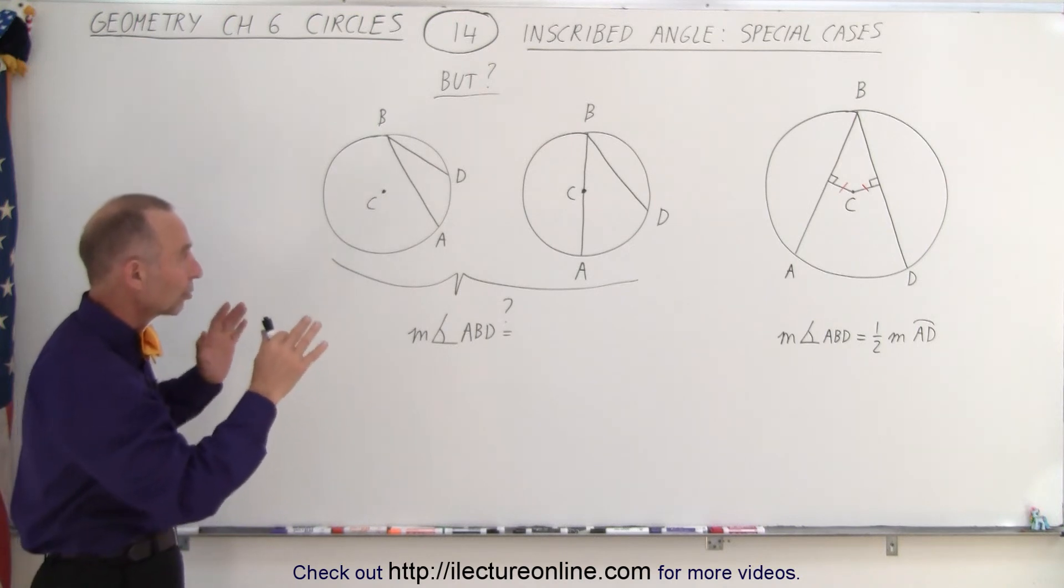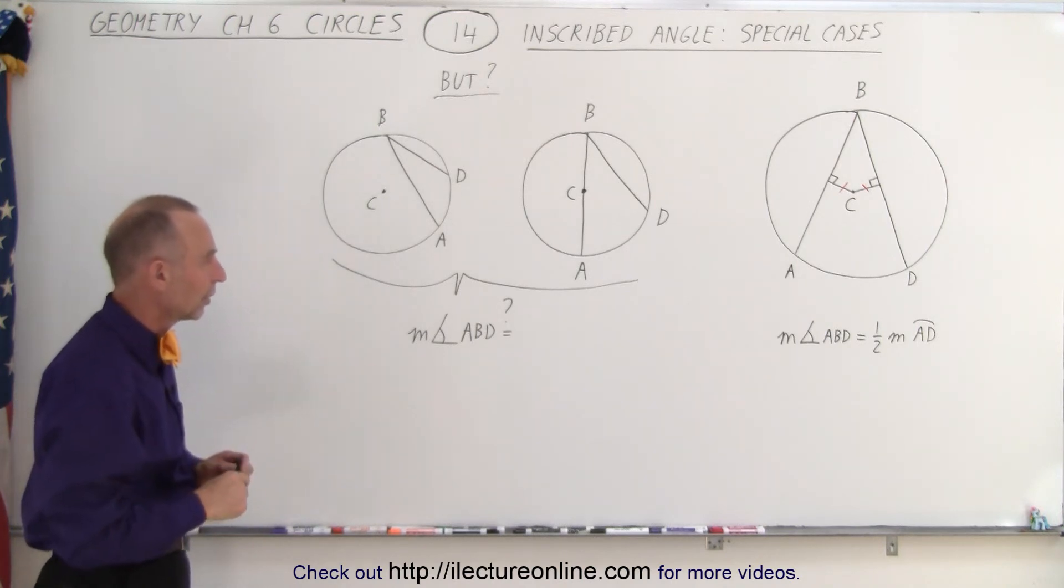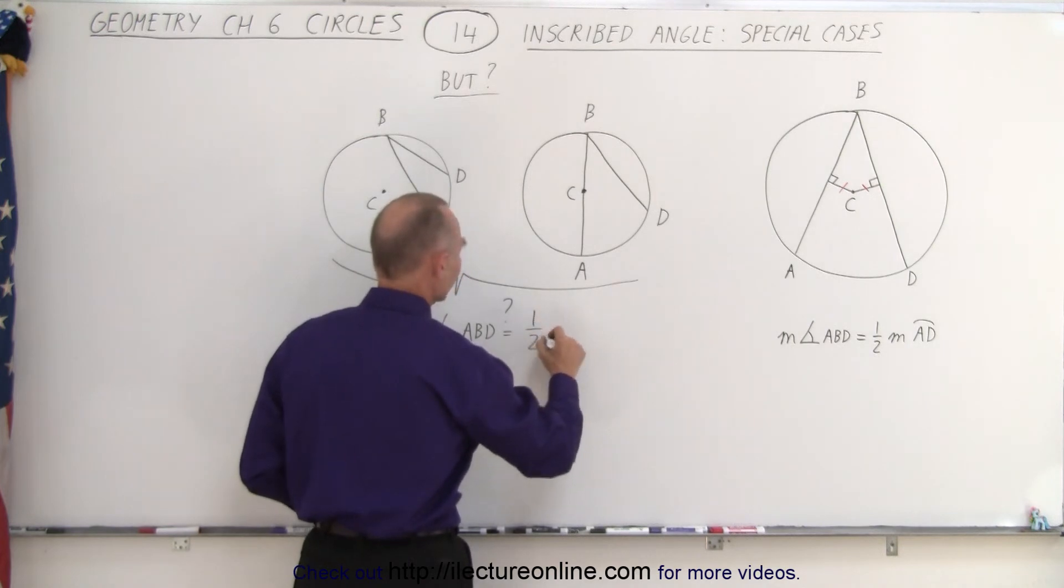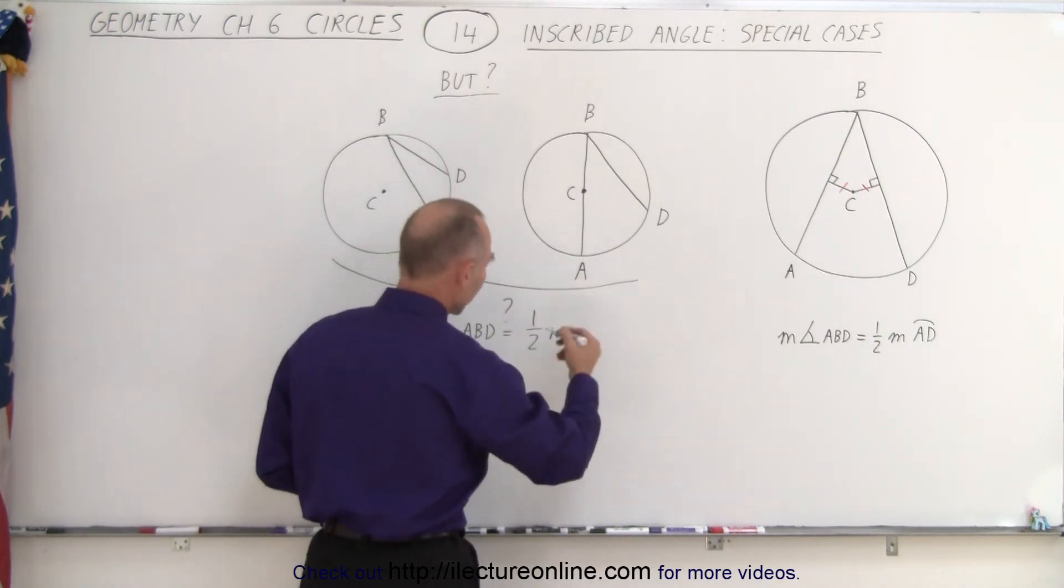It doesn't matter what the shape is, which way it's directed, this is always going to be the case. It's always going to be one-half the measure of the intercepted arc, which in this case would be AD.